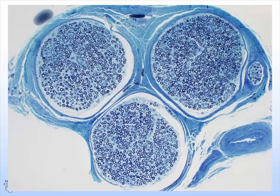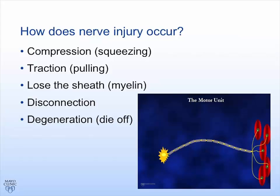How do you get nerve injury? It's not just one mechanism. You could compress the nerve and squeeze the myelin in a toothpaste effect. You could pull it with traction. You can have immune disorders that attack the myelin coating. You could have disconnection where it's pulled from its connection to the spinal cord. Or you can have the more common dying off, where the nerve fiber degenerates, usually from its distal end up towards the cell body itself.